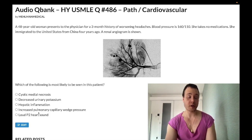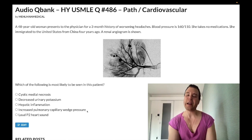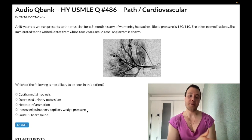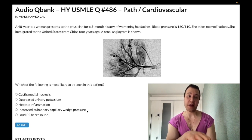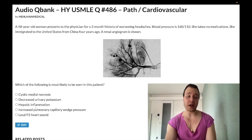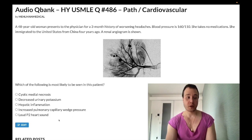Answer choice D — increased pulmonary capillary wedge pressure — is wrong. This refers to left heart dysfunction. In cardiogenic shock or any type of left heart dysfunction, you get increased pulmonary capillary wedge pressure, which equals the left atrial pressure. Not the right answer here.